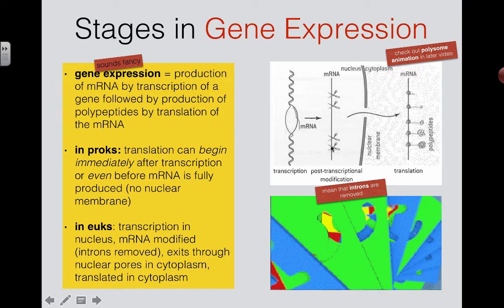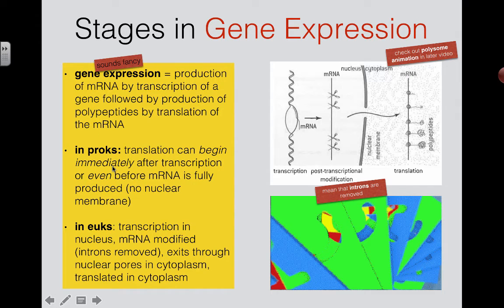In prokaryotic cells, this post-transcriptional modification doesn't happen as far as we know. You can make some inferences about why eukaryotic cells — being more complicated with compartmentalization — might do this modification and what benefits it might allow. One cool thing about prokaryotes is that translation can begin pretty much immediately after transcription, or even before the mRNA is fully produced.